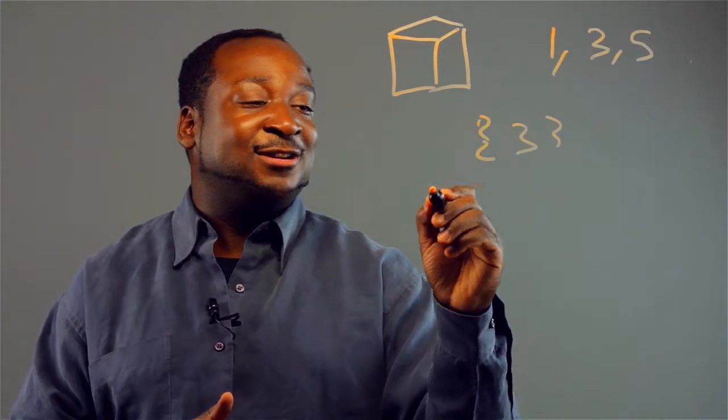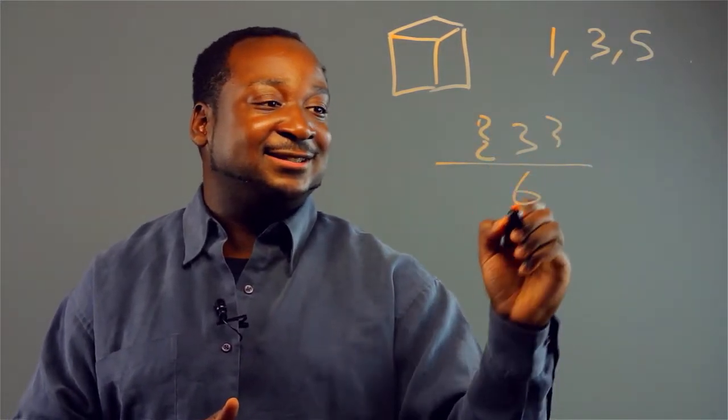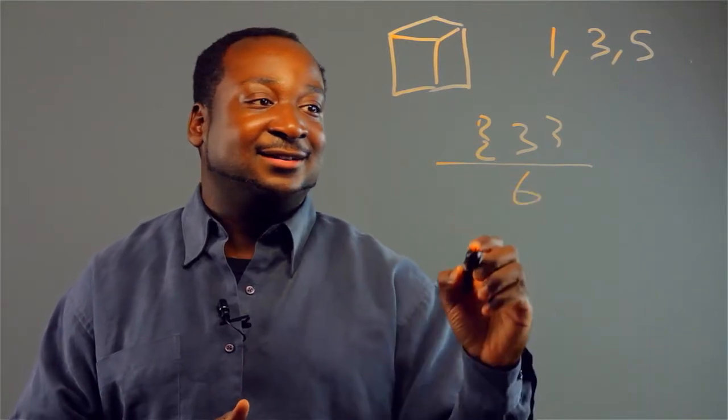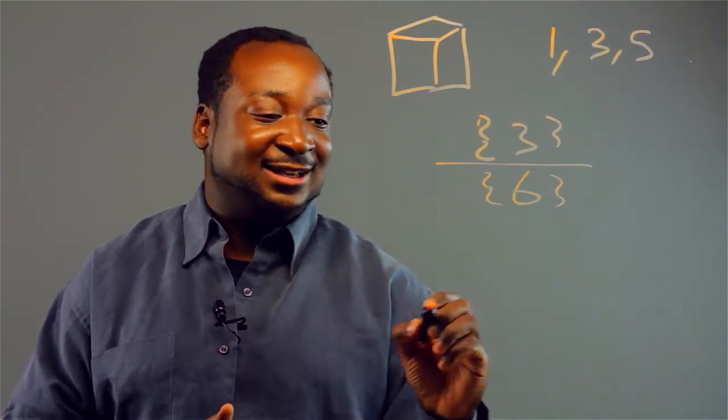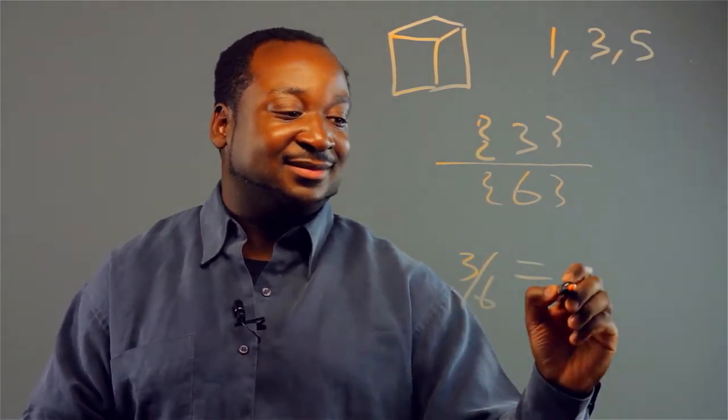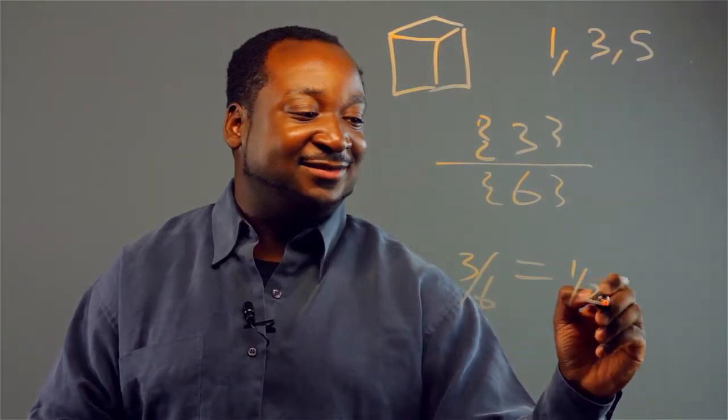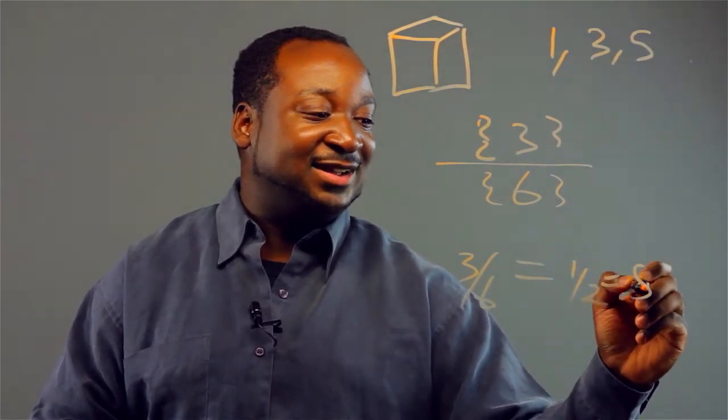Now the total number of sides is six, so the probability when I divide these is going to be three over six, which is equivalent to one-half and that's equivalent to 0.5.